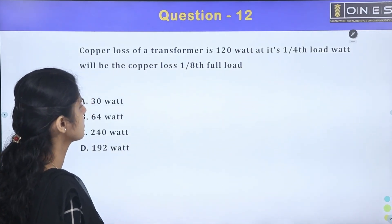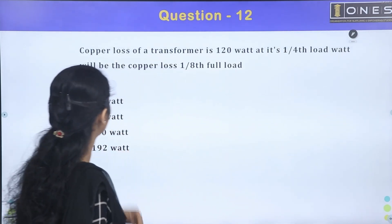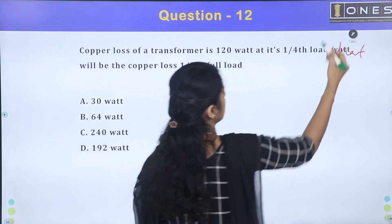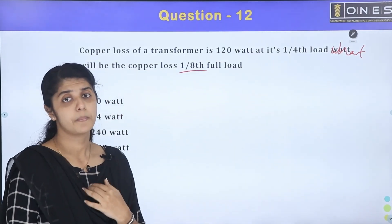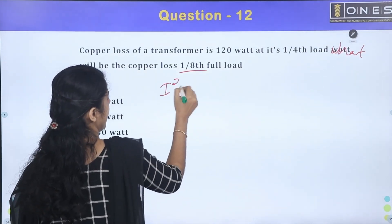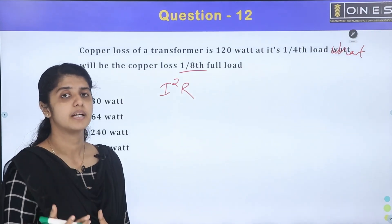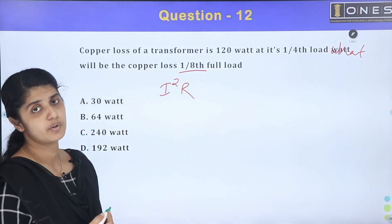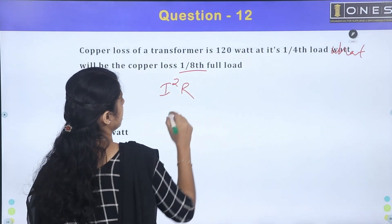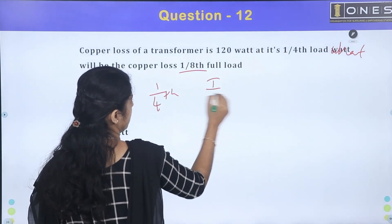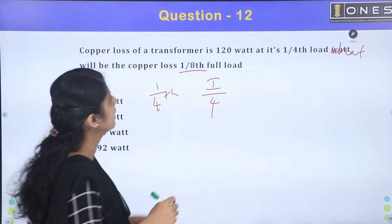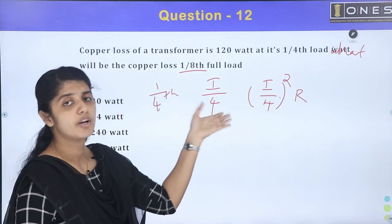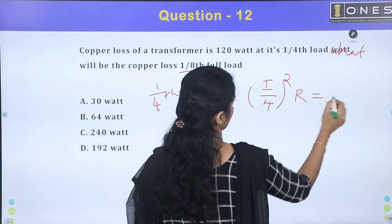Next question: The copper loss of a transformer is 120 watts at one-quarter full load. What will be the copper loss at one-eighth full load? At one-quarter load, the current is I/4, so the copper loss equation is (I/4) squared times R equals 120.